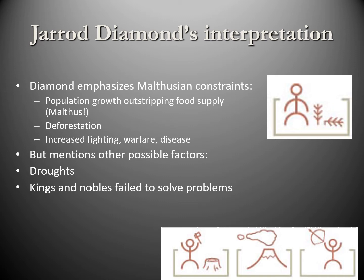Diamond also points out that Maya leaders — the kings and nobles — failed to solve the people's problems, whether social or environmental. He argues the elites were more concerned with their own short-term aggrandizement and personal interests rather than dealing with the mounting social and environmental problems facing the Maya. Eventually, this led to collapse. Diamond is warning us today, where we see many parallels: we're running up against environmental limitations, we have population growth, and many would argue our leaders are failing to solve the problems the majority of people face.